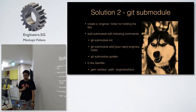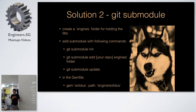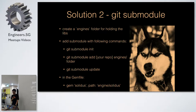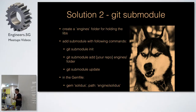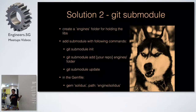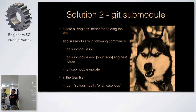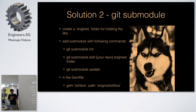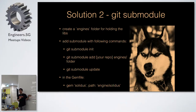So the second solution is Git submodule. Basically you can create a folder to store your submodules. A Git submodule is just like your Git repo. If you do `git submodule add` with your repo and a path to the folder you want to add the submodule to, it will basically check out the project and put it in your local Git repo. And then in your Gemfile you just pass it a path to your local gem. That's it.